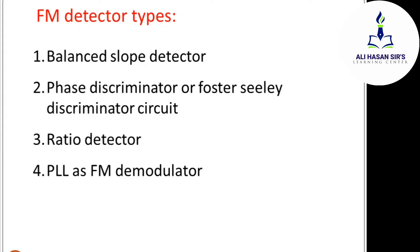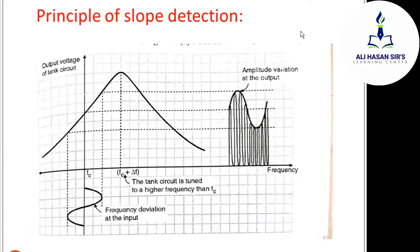We are now moving directly to the third type — the ratio detector circuit. As given in this slide, the principle is that when the input frequency deviates, the tank circuit produces an equivalent amplitude variation. We have two tank circuits handling the frequency modulated wave input.